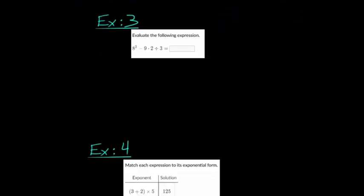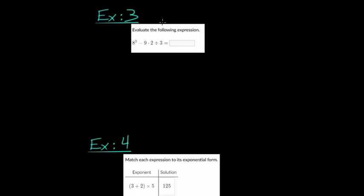On to example number 3. Again, we're evaluating the expression. Now we have 8 to the third power. 8 times 8 times 8. This would be 64 times 8, which you can either put this into a calculator, or you can do 8 times 60.